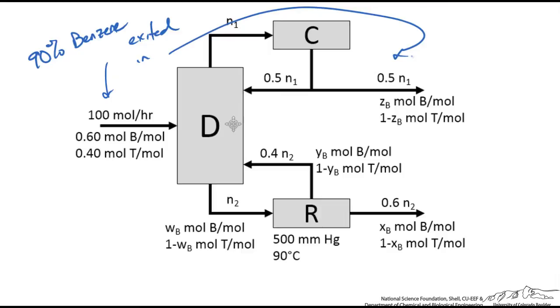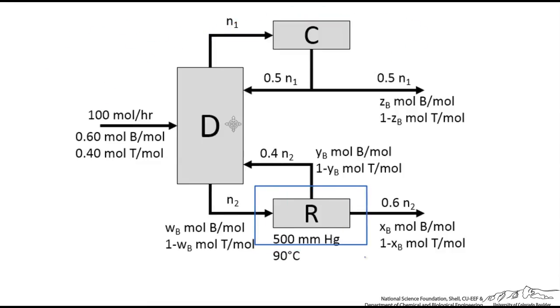Here we are going to do a reboiler balance and the same type of analysis. The reboiler is down here. Doing a degree of freedom analysis yields 4 unknowns: N2, XB, YB, and WB.